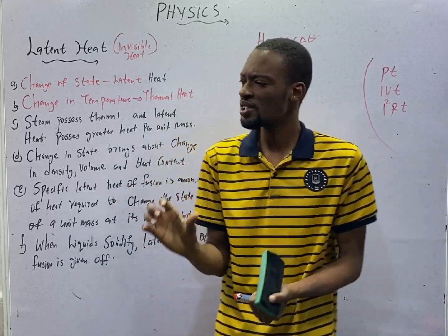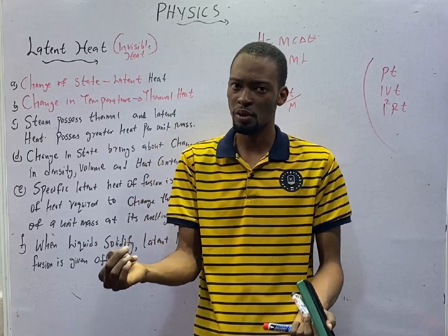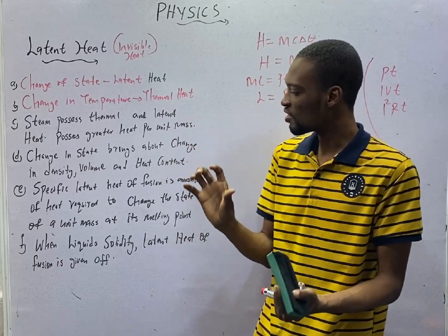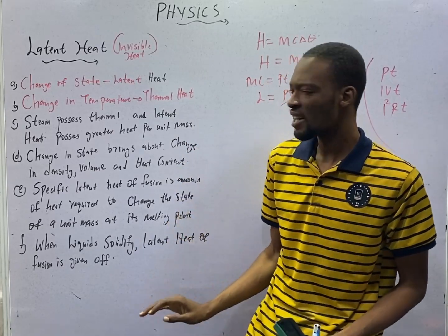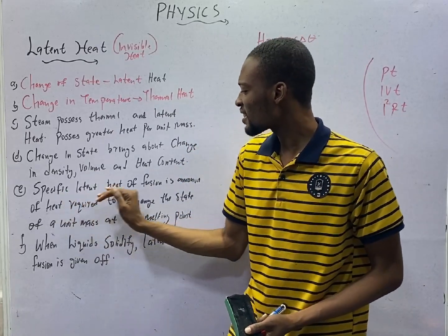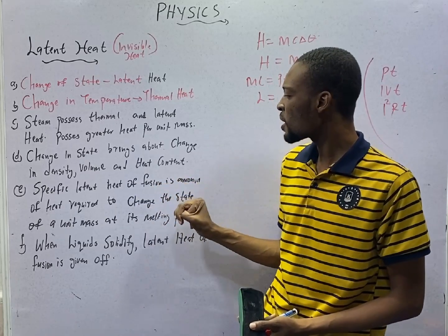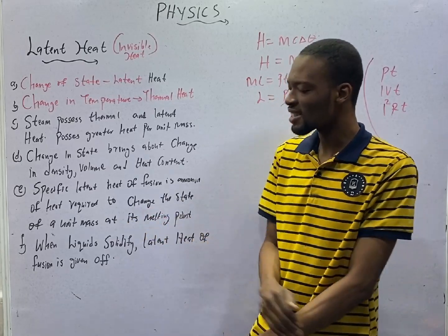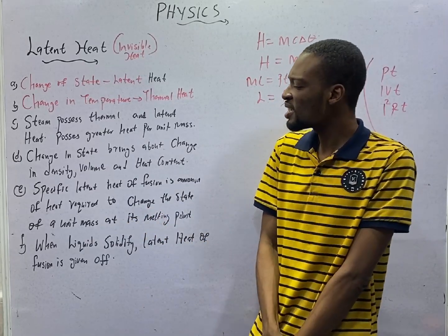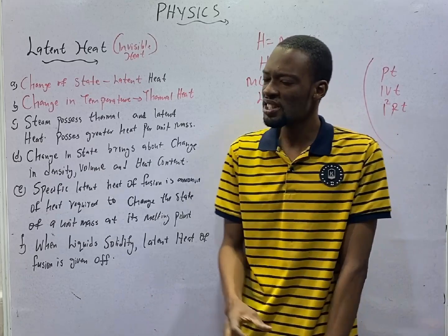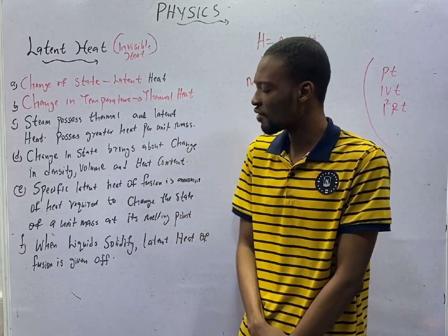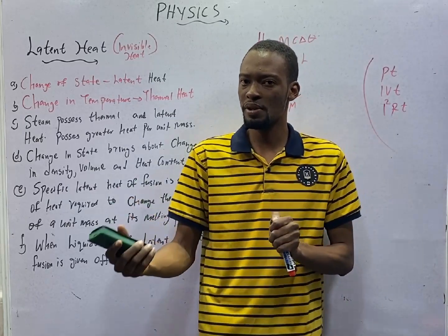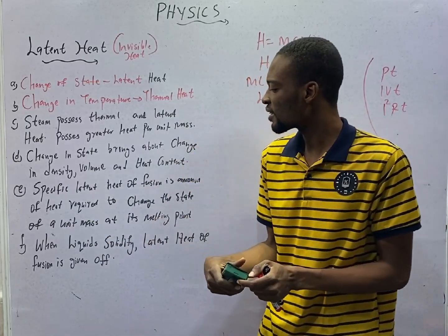However, change in state does not bring about change in temperature. When matter changes state, temperature always remains constant. Specific latent heat of fusion is the amount of heat required to change the state of a unit mass at its melting point. So the heat you need to change the state of a unit mass of a substance at its melting point without raising temperature is referred to as specific latent heat.